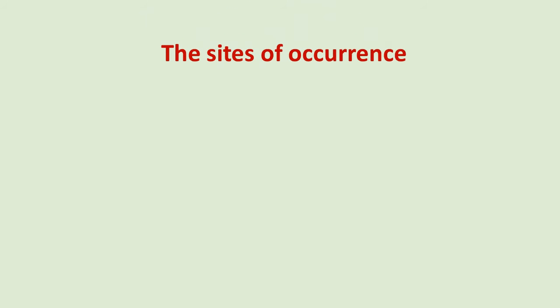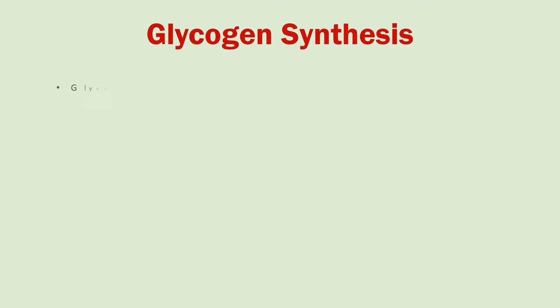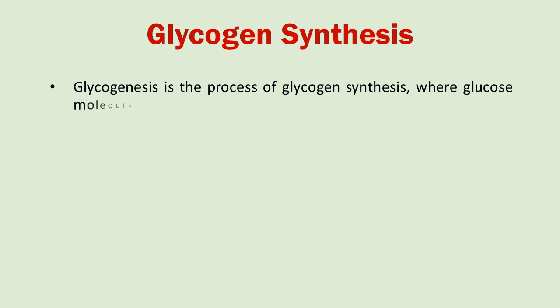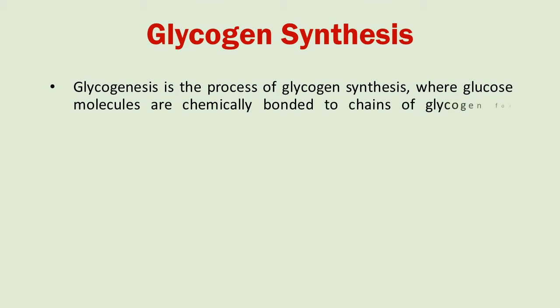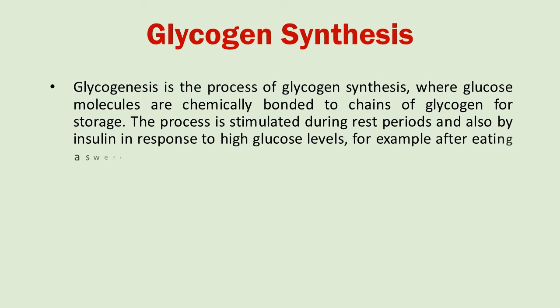The site of occurrence of both Glycogenolysis and Glycogenesis are hepatocytes, or liver cells, and myocytes, or muscle cells. Glycogenesis is the process of glycogen synthesis, in which glucose molecules are added to the chains of glycogen for storage. This process is activated during rest periods and also by insulin in response to high glucose levels — for example, after taking a carbohydrate-containing sweet in food.